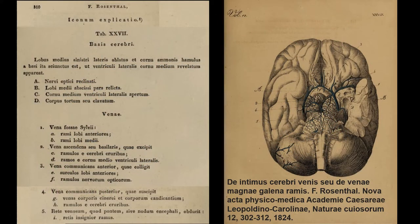This is a segment of the original article published by Rosenthal describing the vein that ended up bearing his name. Here you can see the right vein of Rosenthal, partially obscured by the temporal lobe. On the left side the temporal lobe has been removed in part, allowing better visualization of the ramifications of the vein of Rosenthal. Please stop the video and take a few seconds to look at the figure.